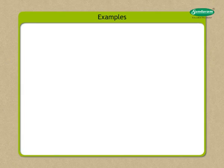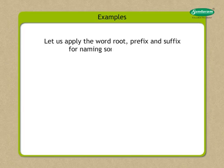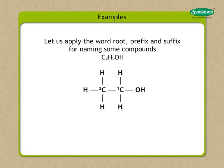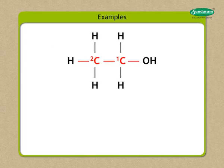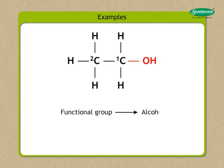Let us apply the word root, prefix, and suffix for naming some compounds. Take the example of C₂H₅OH. One hydrogen atom is substituted by the -OH group. Select the longest chain of carbon atoms. In this compound, the longest chain is of two carbon atoms, and the name of the parent alkane is ethane.